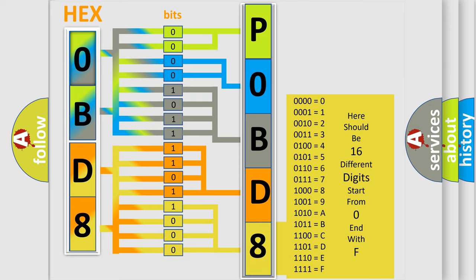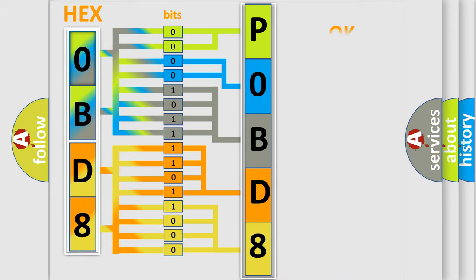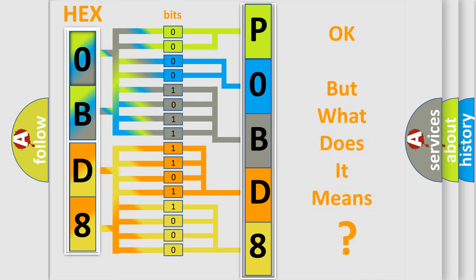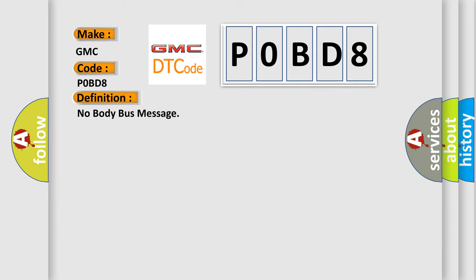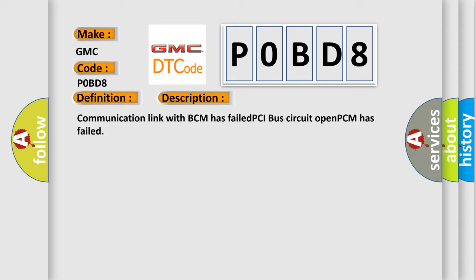We now know in what way the diagnostic tool translates the received information into a more comprehensible format. The number itself does not make sense to us if we cannot assign information about what it actually expresses. So, what does the diagnostic trouble code P0BD8 interpret specifically for GMC car manufacturers? The basic definition is: No Body Bus Message. Here is a short description of this DTC code: Communication link with BCM has failed. PCI bus circuit open. PCM has failed.